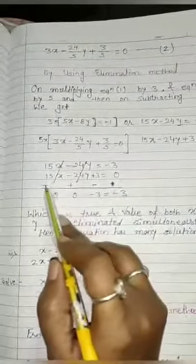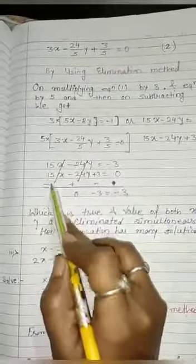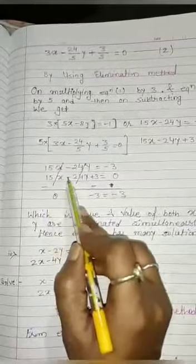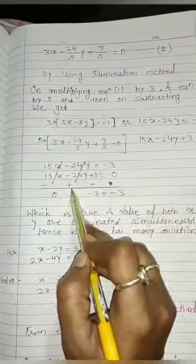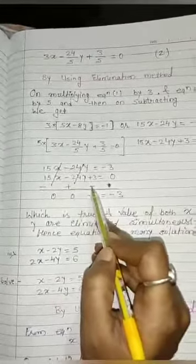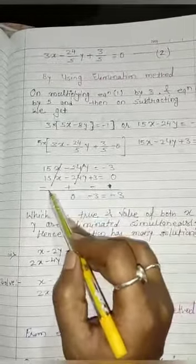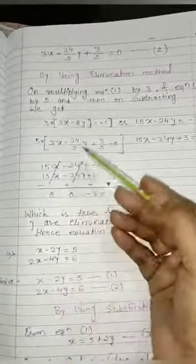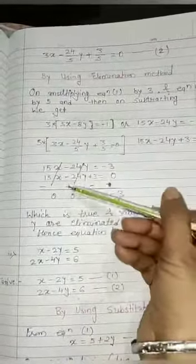Subtract both the equations. In subtraction, sign changed. Positive sign converted to minus. Minus sign converted to plus. Plus sign converted to minus. 15x minus 24y both are cancelled because one is positive and other is negative.